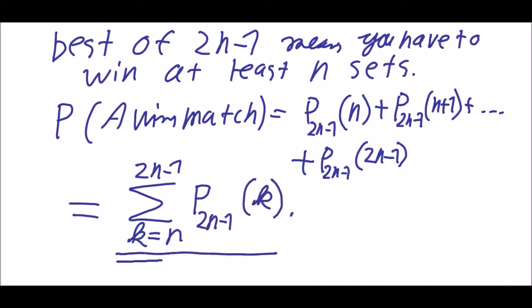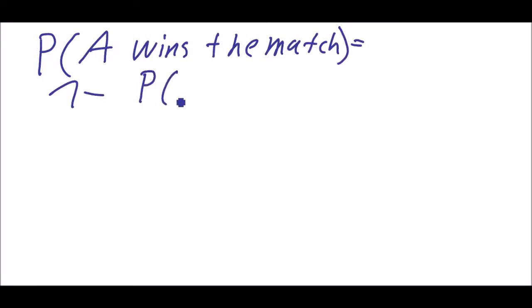And this is what we get as a formula. We can also think of it this way: the probability that A wins the match is the same as one minus the probability that A loses the match.